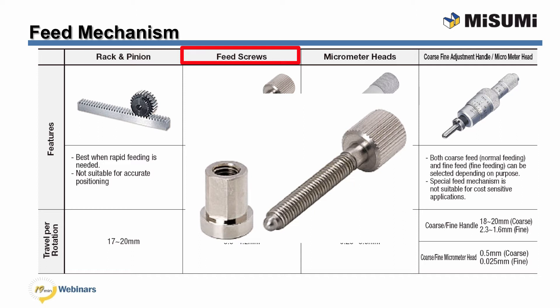This feed mechanism is utilized in many of our stage products since it is more economical than the micrometer heads. Travel per rotation of our feed screw is between 0.5 to 4.2 linear.